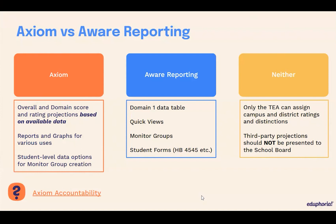We talked about what Axiom is and what AWARE reporting can do. Now I want to talk about accountability scoring. Axiom and AWARE in this conversation are completely centered around the idea of accountability projections. However, we want to make sure to emphasize that only the agency — only TEA — can assign campus and district ratings and distinctions. So you may go into Axiom, you may see a letter grade, you may see numbers. Those are based off of the methodologies, but it's all based on available data, and the source of data is the state. Only TEA can assign those ratings.